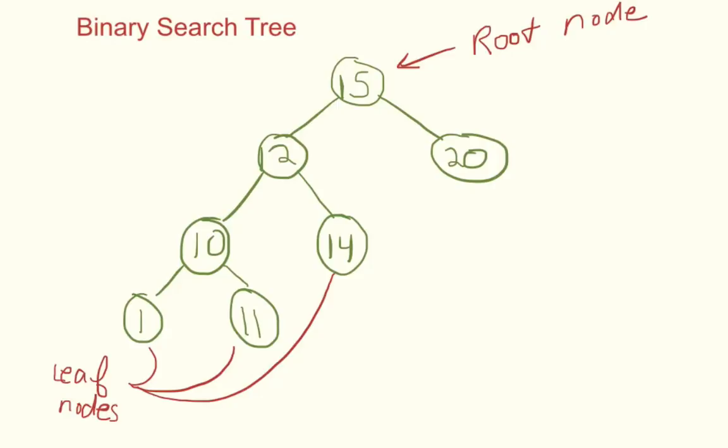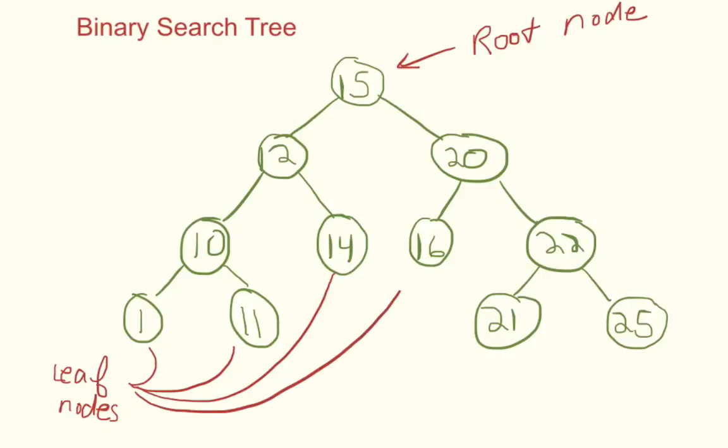Now we're going to go on the right hand side. Node 20 has two children: one is going to be 16 and the one on the right is going to be 22. Then 22 has two children nodes as well: it's going to be 21 and the last one is 25. The leaf nodes on this side are 16, 21, and 25, and we have a complete binary search tree structure setup.